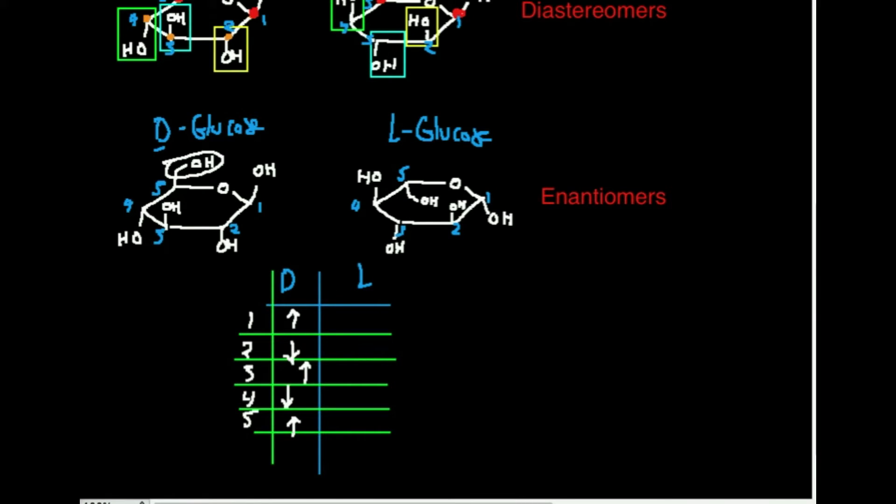Let's look at L-glucose. What's position 1? Well, that's clearly down. Position 2 is clearly up. 3 is down. 4 is up. And 5, again, this hydroxymethyl group is clearly down.